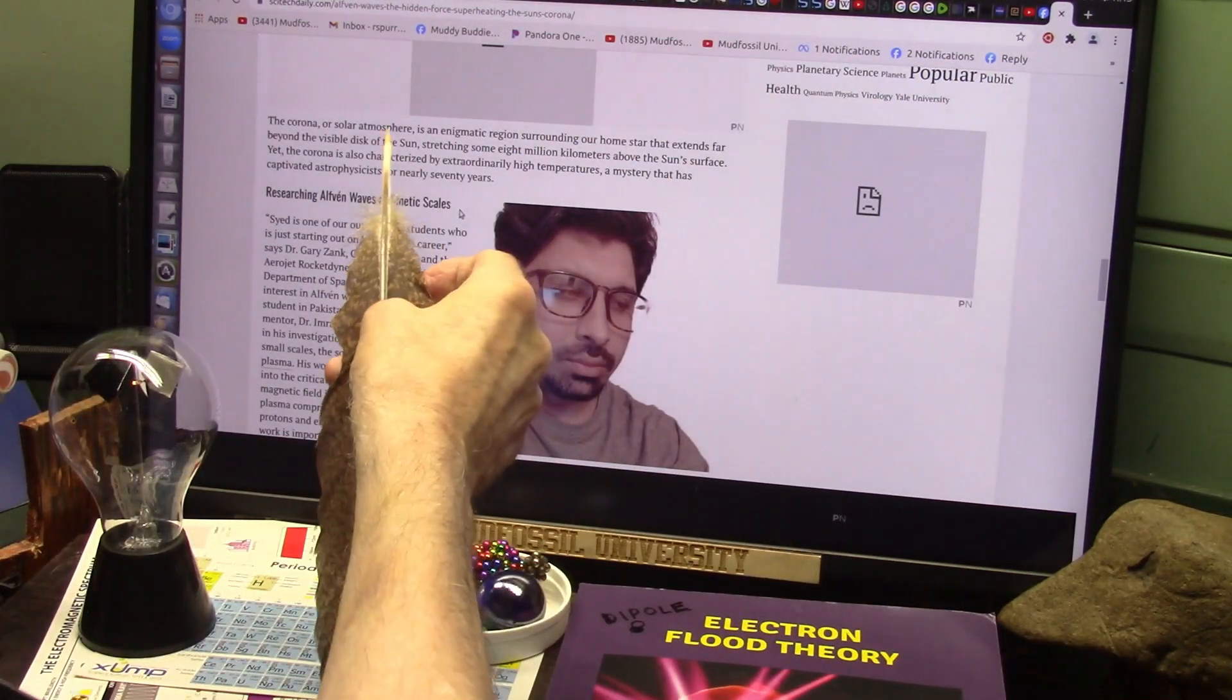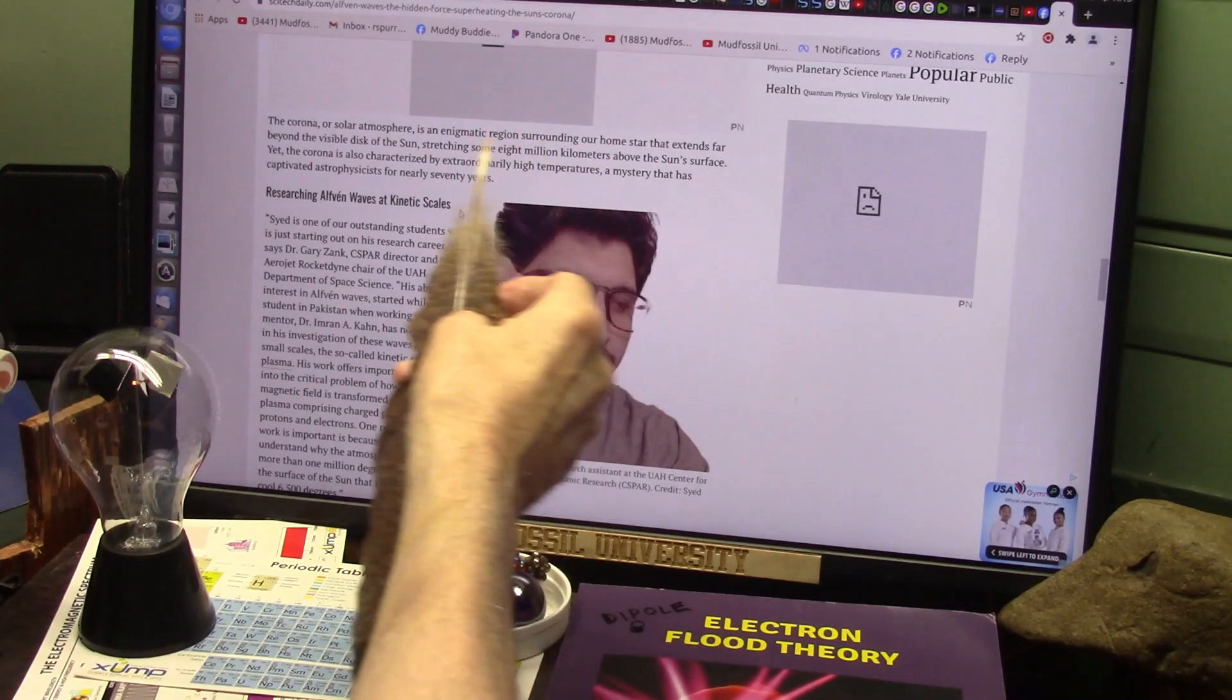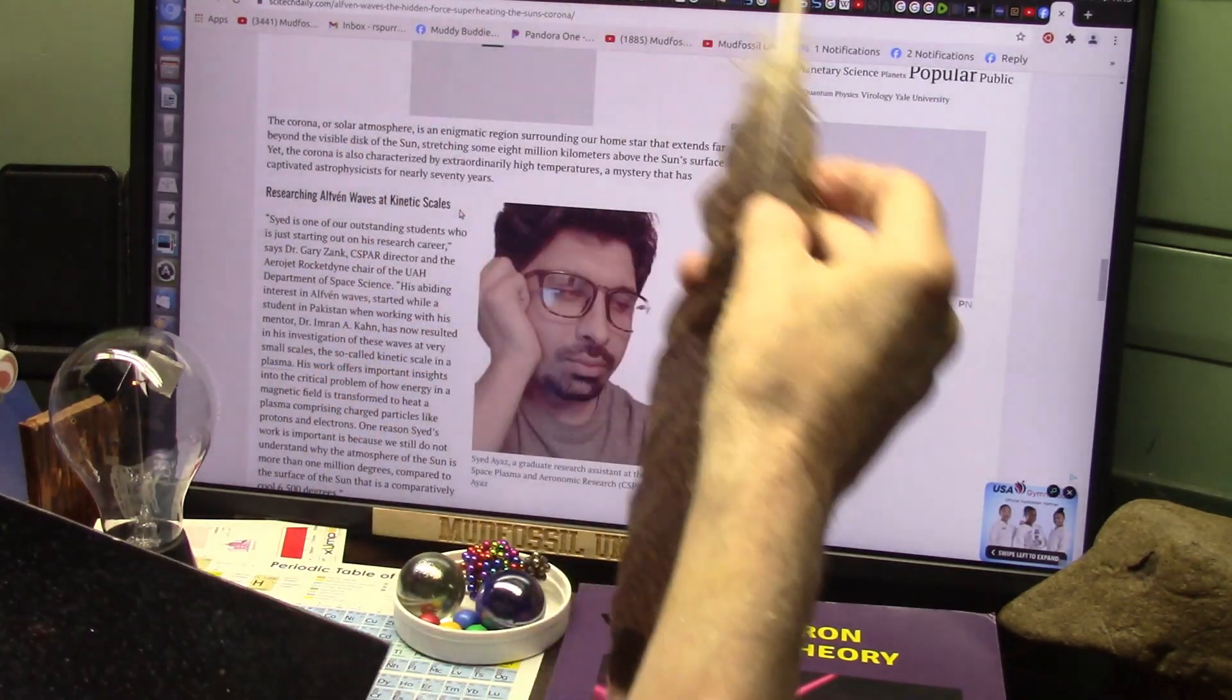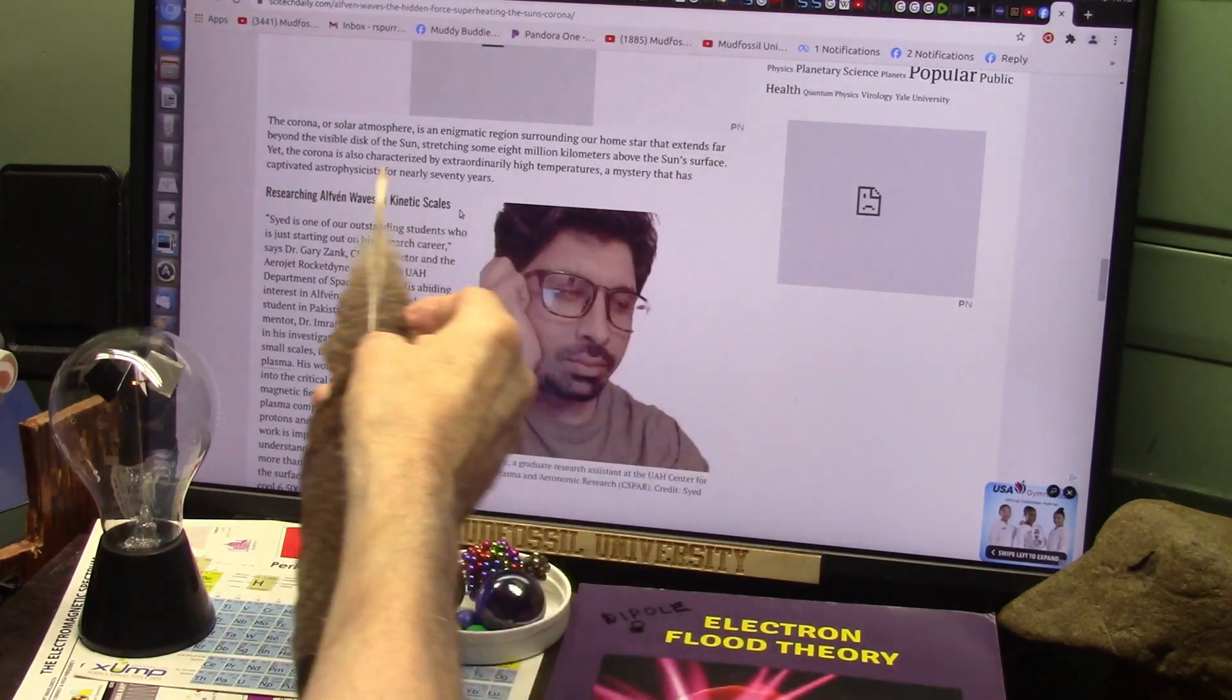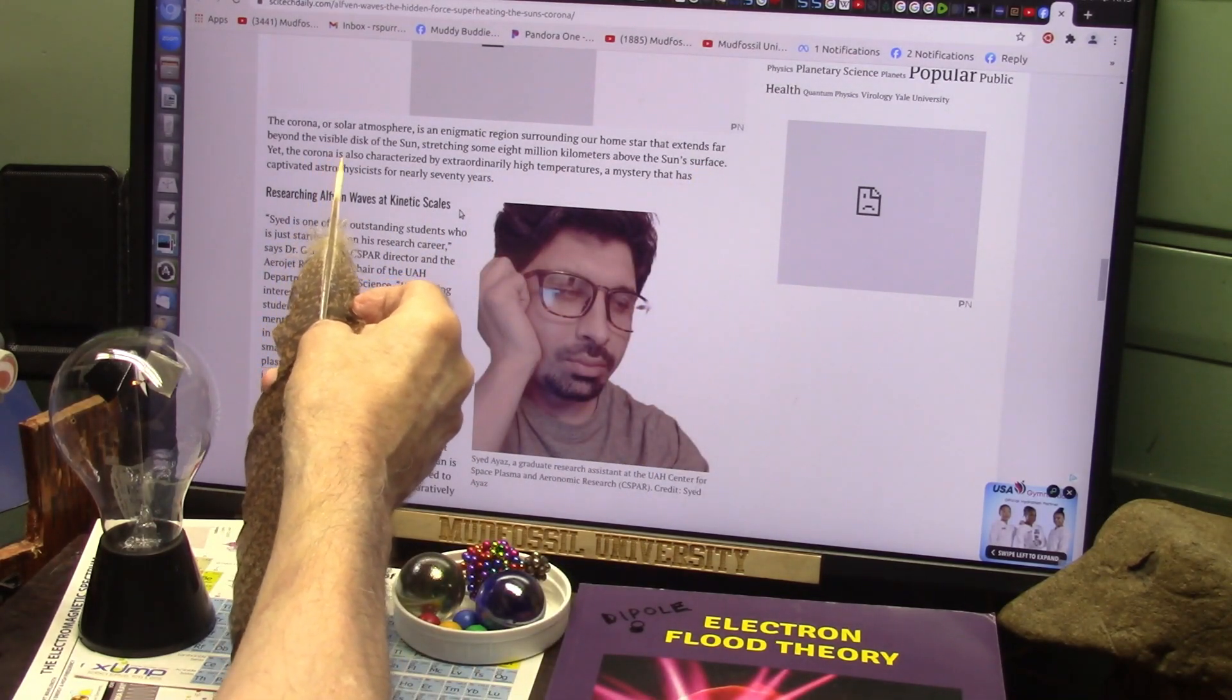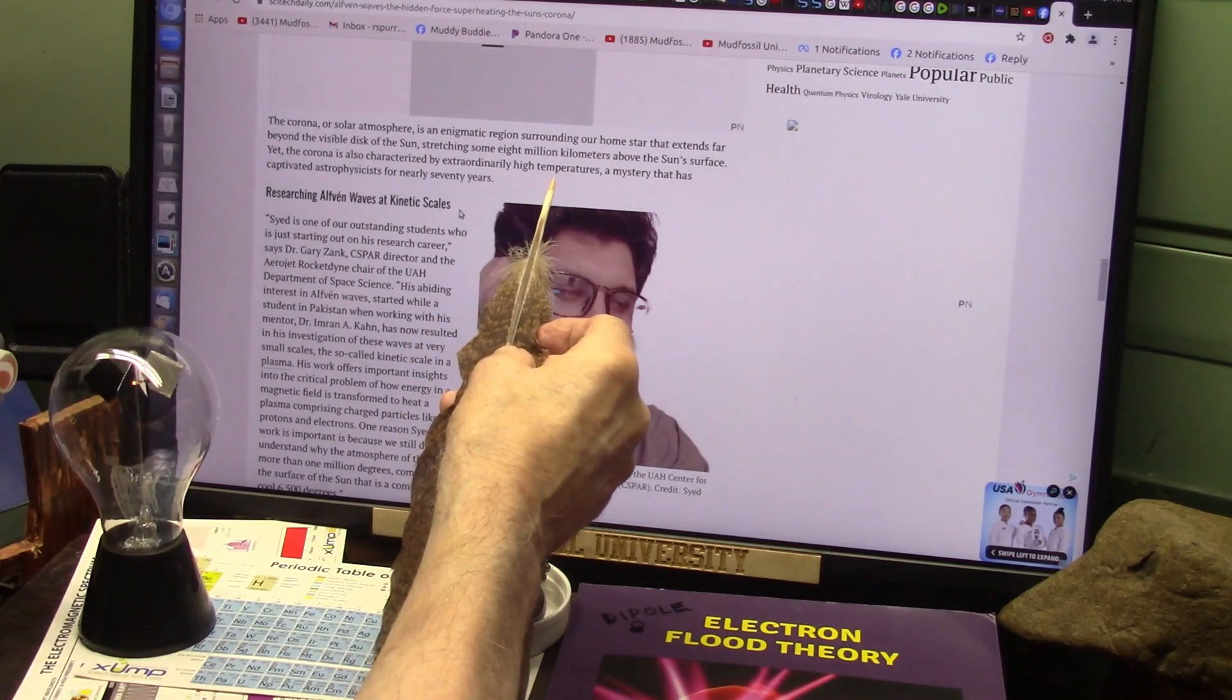Here's the statement: the corona, the solar atmosphere, the atmosphere just like we have around our planet, is an enigmatic region surrounding our home star, extends far beyond the visible disk of the Sun, stretching eight million kilometers above the Sun's surface.